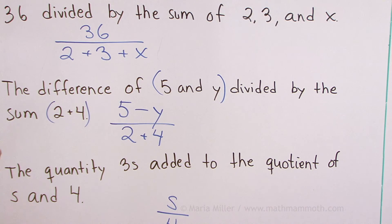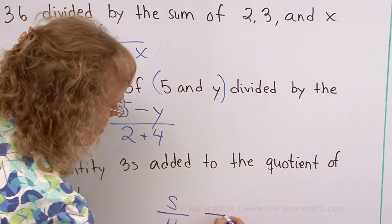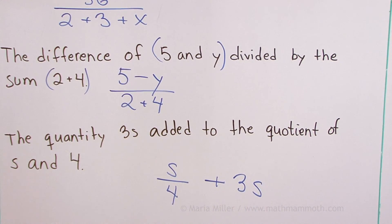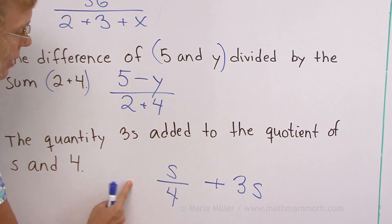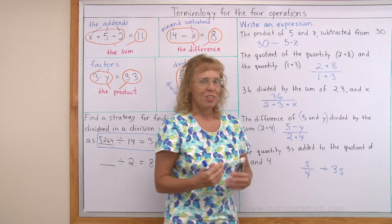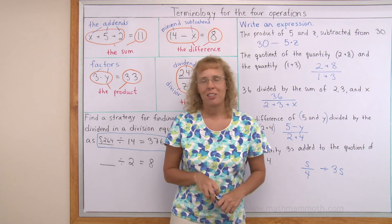And then 3s is added to that. So we could write this plus 3s. It would also be equivalent to write 3s plus s divided by 4 because you can add quantities in any order. And now we are all done with this lesson.